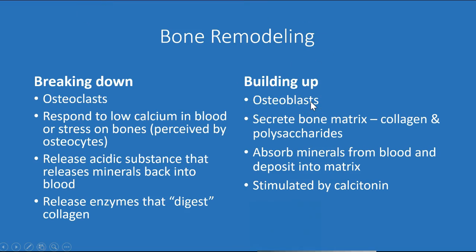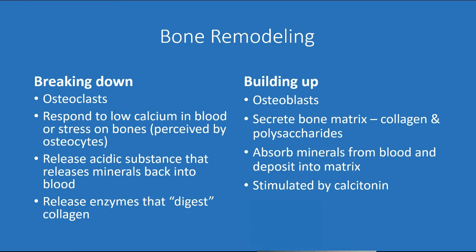When osteoclasts are done, fortunately they undergo apoptosis so they can't overdo it. They also stimulate or call in the osteoblasts. The osteoblasts put down new bone matrix, specifically including collagen and polysaccharides. These osteoblast cells can actually absorb minerals from the blood and put them back into the bone — so if you've got extra, you can store it right there in the bone. Osteoblasts are stimulated by calcitonin.